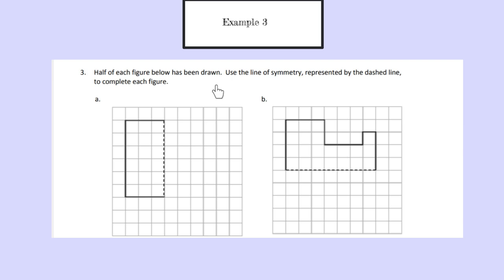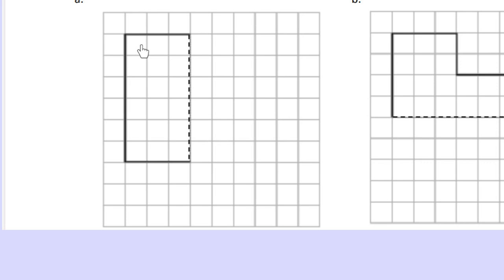Now for example 3. Our directions tell us half of each figure below has been drawn. Use the line of symmetry represented by the dashed line to complete the figure. In part A, we see a rectangle that is 3 by 6, and we need to create another rectangle 3 by 6 off of this dashed line, which is our line of symmetry.